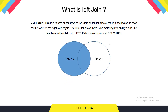Let me show you the image. As you can see, we have table A and table B. We are getting all the rows from table A, including matching rows from table B. Whatever extra rows exist in table A but not in table B, those rows would be null in the resultant data table.